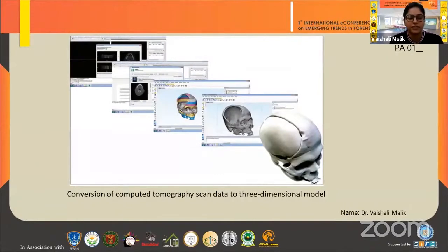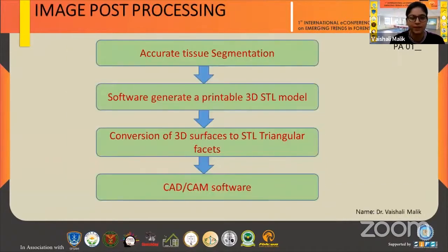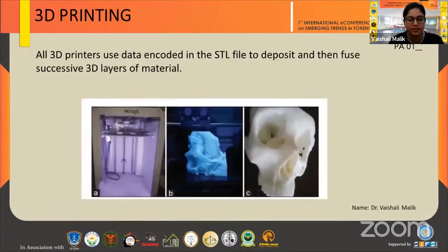This is the diagrammatic representation of conversion of CT scan data to a three-dimensional model. In image post-processing, the first step is accurate tissue segmentation of the desired tissue. Software generates a printable 3D STL model and converts the 3D surfaces to STL triangular facets. CAD/CAM software is most commonly used for 3D manipulation. After all these adjustments, data is transferred to 3D printers, which use data encoded in the STL file to deposit and fuse successive 3D layers of materials.